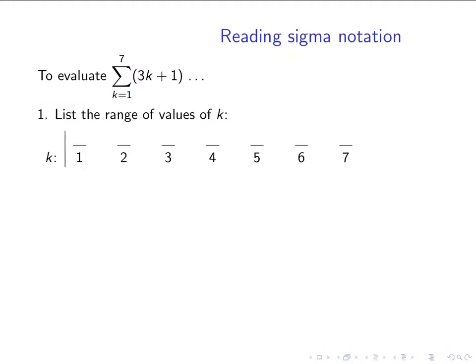So here's the step process. First, list the values of the index variable. So in this case, the values of k go from 1 to 7, and you can see I put blanks above them to give myself room to write step 2.